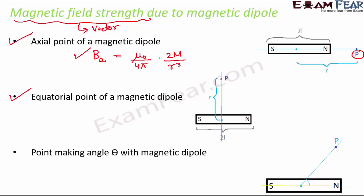For an equatorial point P, the magnetic field is equal to mu naught by 4 pi into M by r cube, where r is the distance of point P from the center of the magnet. The direction of magnetic field at the equatorial point is along a line parallel to the north-south of the magnet.